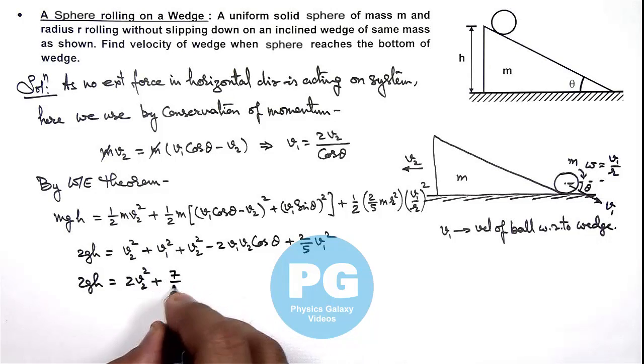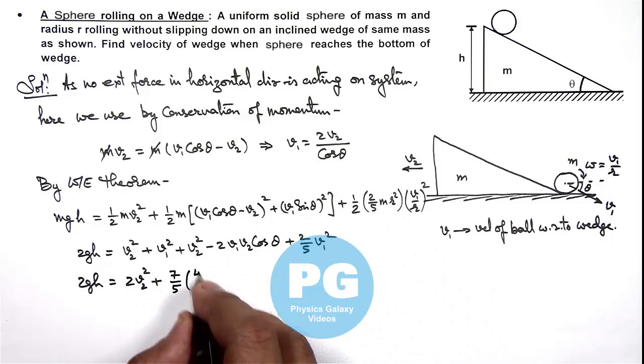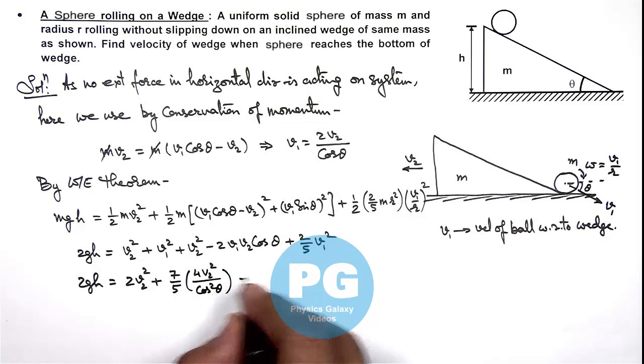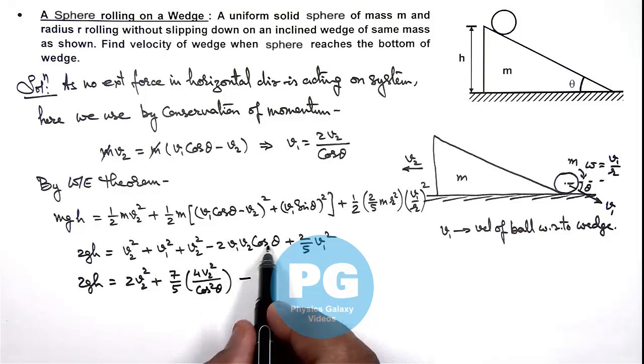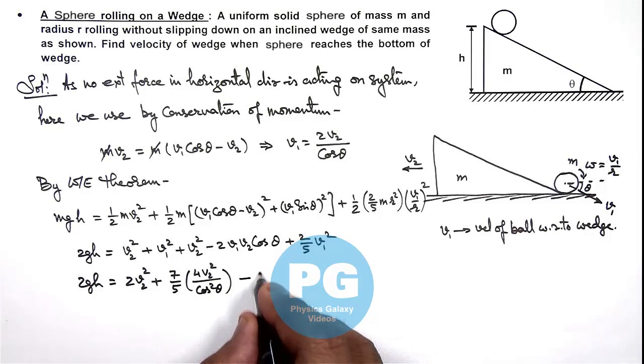So this is (7/5), and v1² we can write as 4v2² divided by cos² θ. And minus here we can write v1 cos θ is equal to 2v2, so this becomes 4v2².